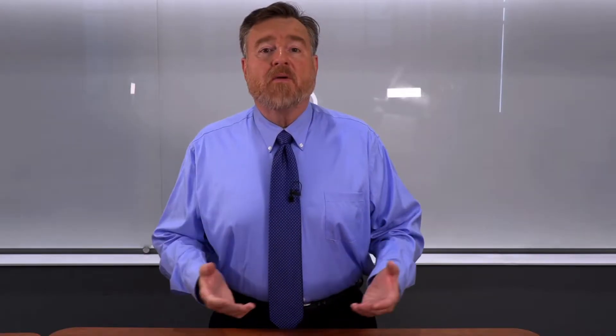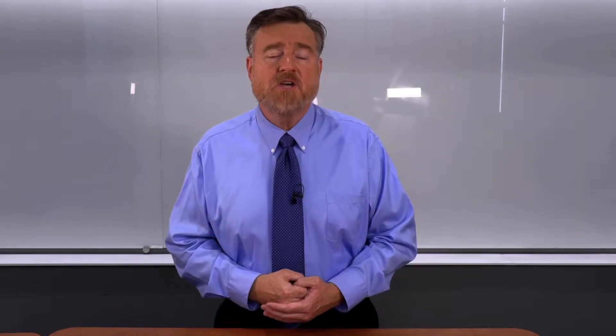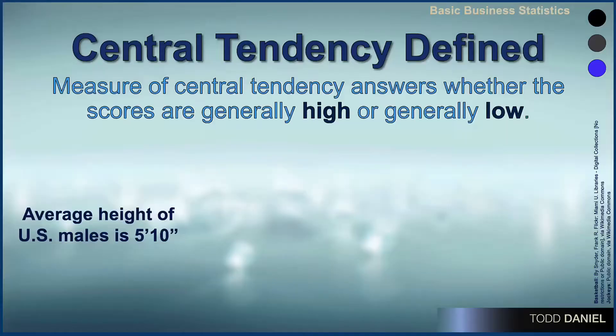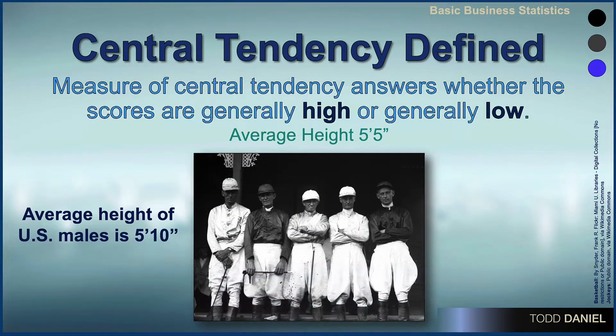On the other hand, there are other groups whose measure of central tendency is generally low. By contrast to basketball players, if we were looking at the average height of horse jockeys, we would find that their average height is less than what is typical for American males. Their measure of central tendency is generally low.